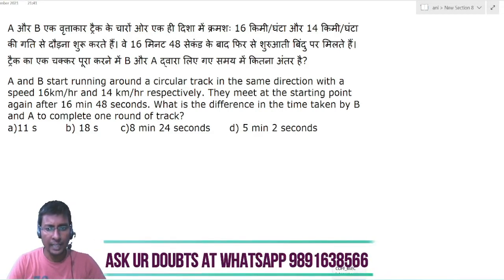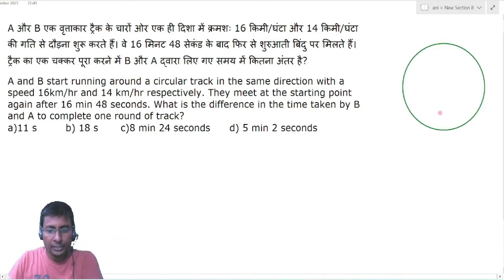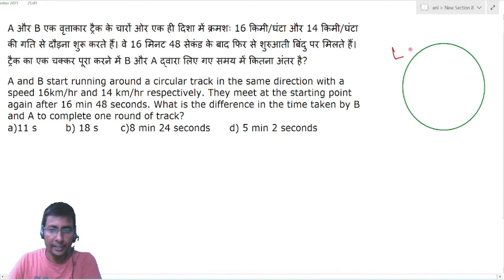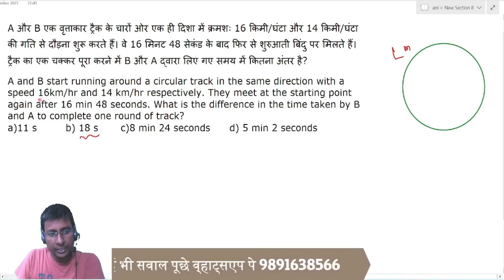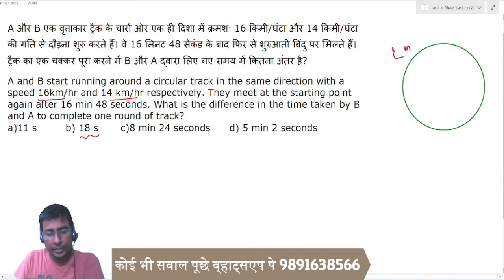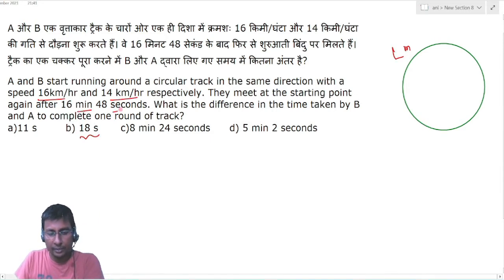What is the difference in the time taken by B and A to complete one round of the track? This is a circular track of length L meters. The speeds are given as 16 km/h and 14 km/h, and the meeting time is given in minutes and seconds.